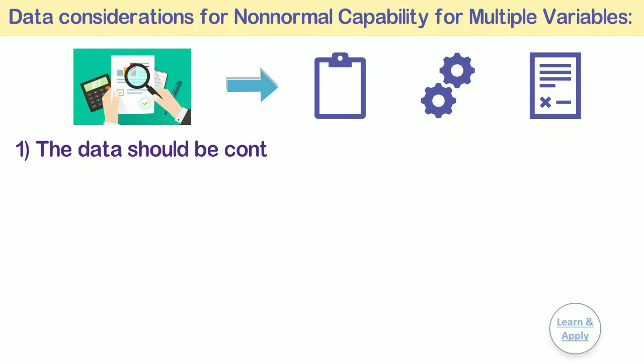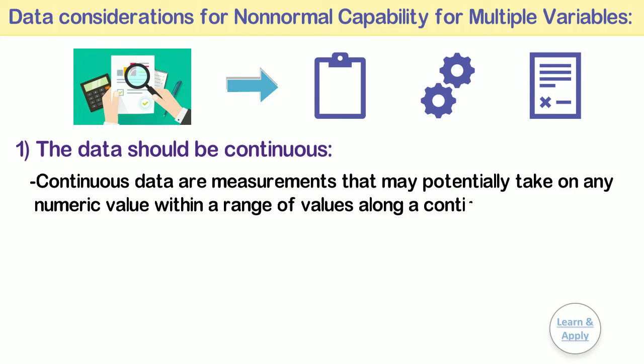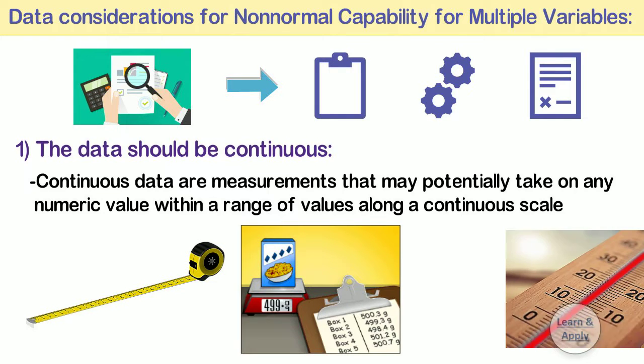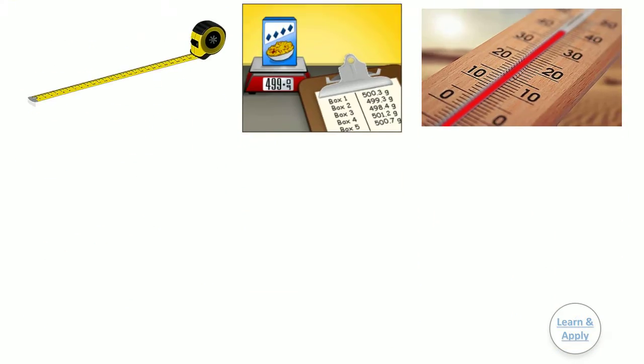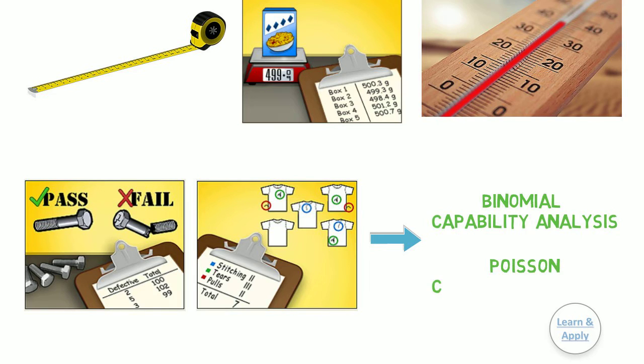First, the data should be continuous. Continuous data are measurements that may potentially take on any numerical value within a range of values along a continuous scale, including fractional or decimal values. Common examples include measurements such as length, weight, and temperature. If you have attribute data, such as count of defectives or defects, use binomial capability analysis or Poisson capability analysis. We will see these types of analysis in future videos.